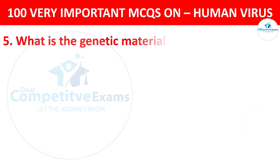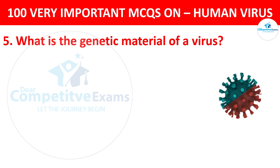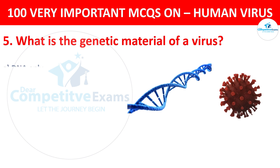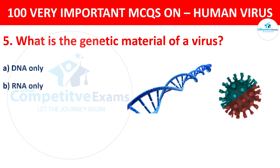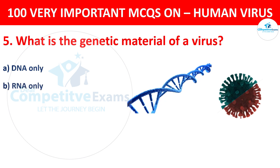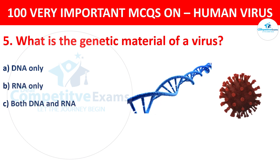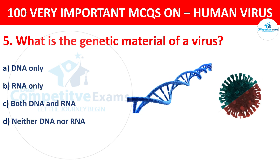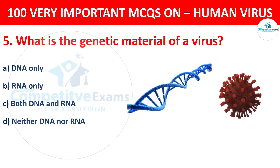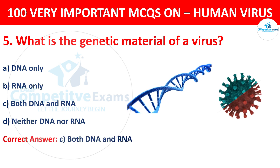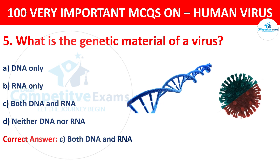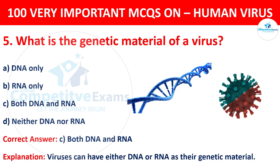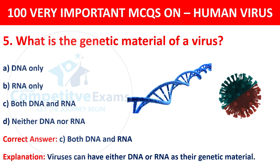Question 5. What is the genetic material of a virus? Your options are DNA only, RNA only, both DNA and RNA, or neither DNA nor RNA. The correct answer is C, that is both DNA and RNA. Viruses can have either DNA or RNA as their genetic material.